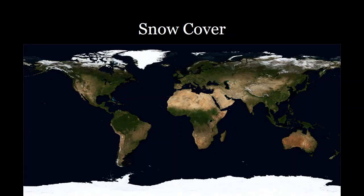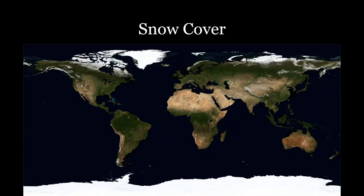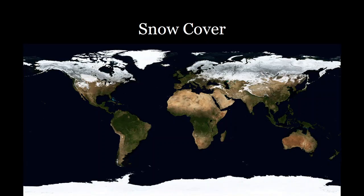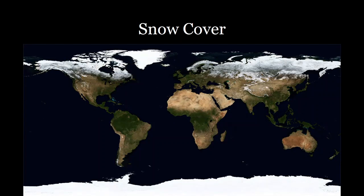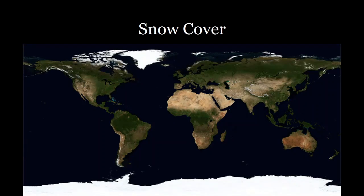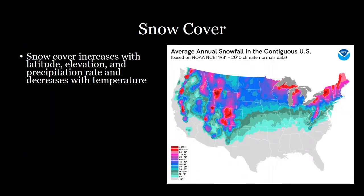Snow cover is also changing rapidly. Snow cover changes with latitude, elevation, precipitation rate, and temperature. Areas with higher elevation such as the high Sierras or Rocky Mountains tend to have higher snowfall rates and more annual snow cover.